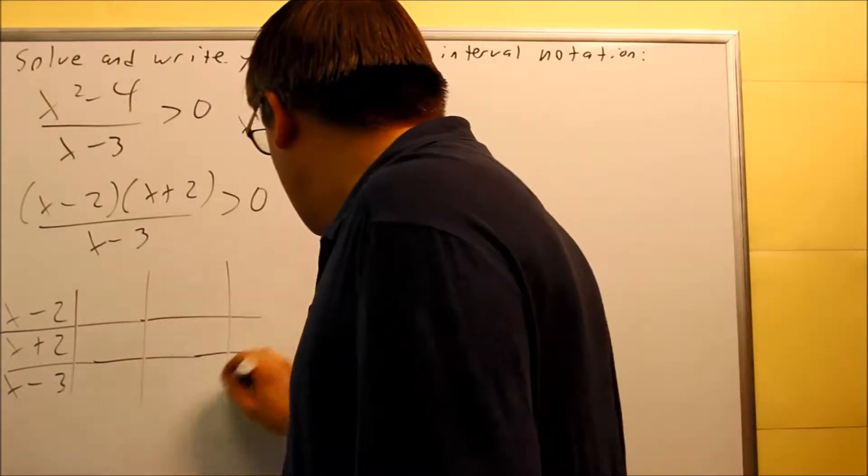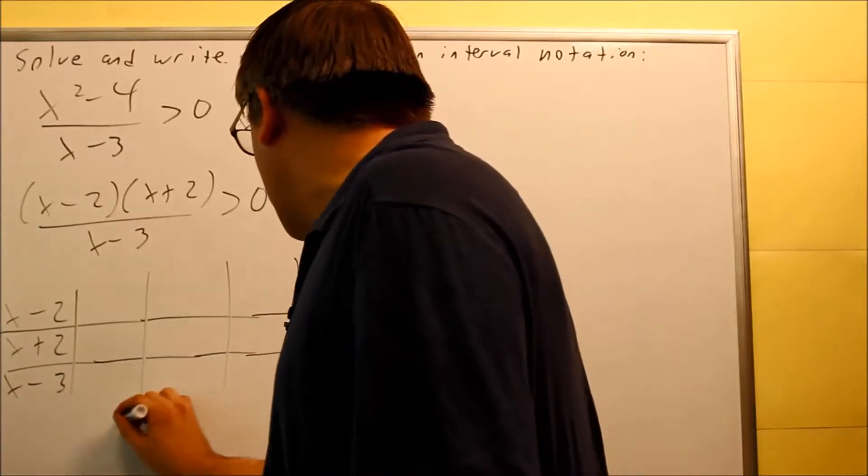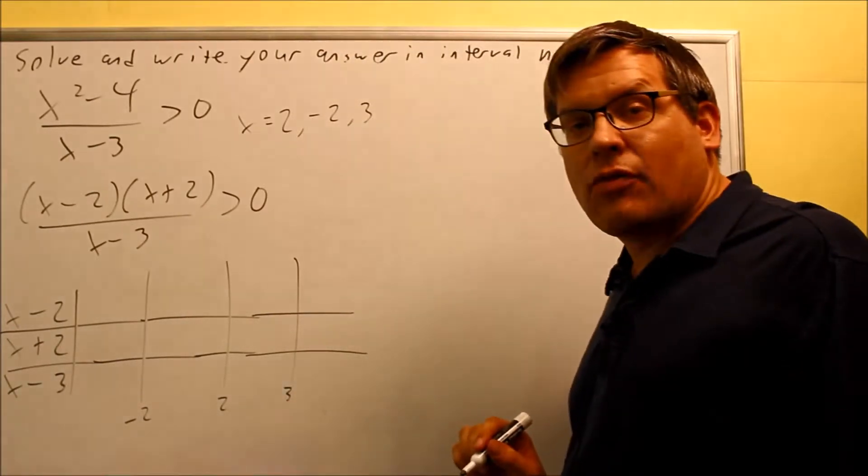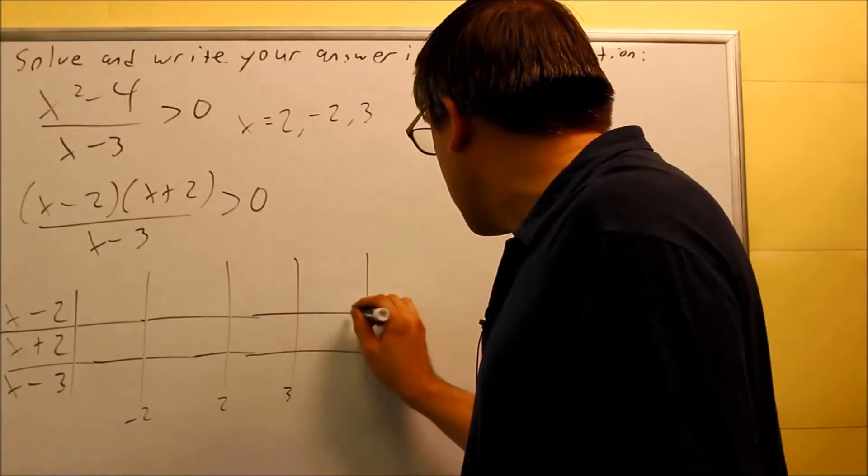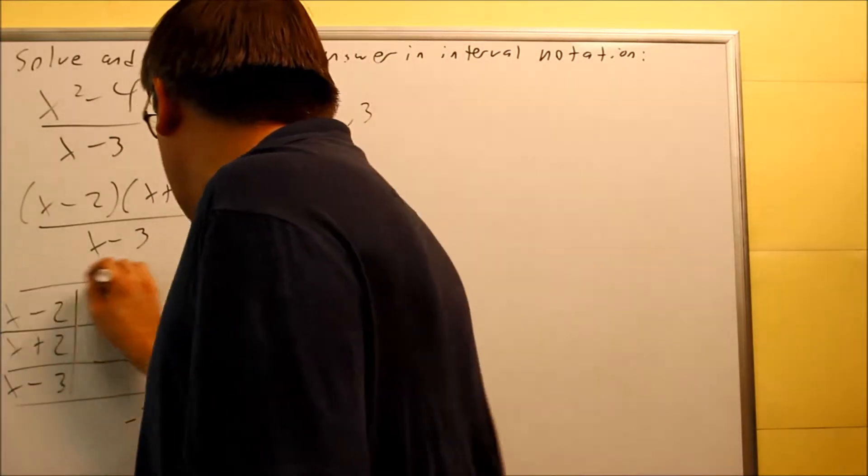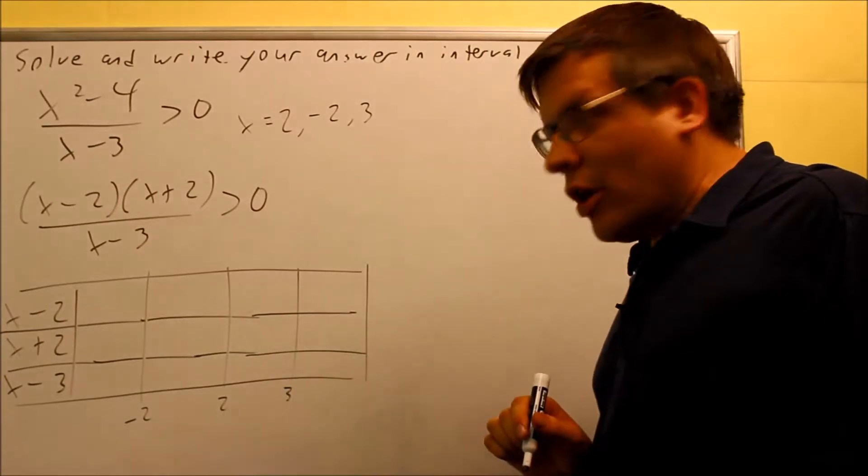I have three lines I'm going to draw down here. I have one for negative 2. We're putting them in order from smallest to largest. We have 2, and then we have 3. Don't forget that you want to draw one more column beyond the last number if you're going to do it this method. So here is the completed table. And now I'm ready to do my test points.